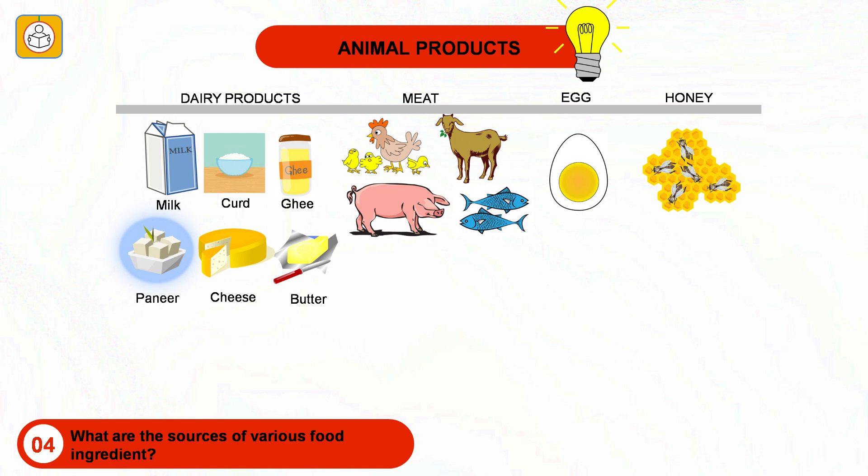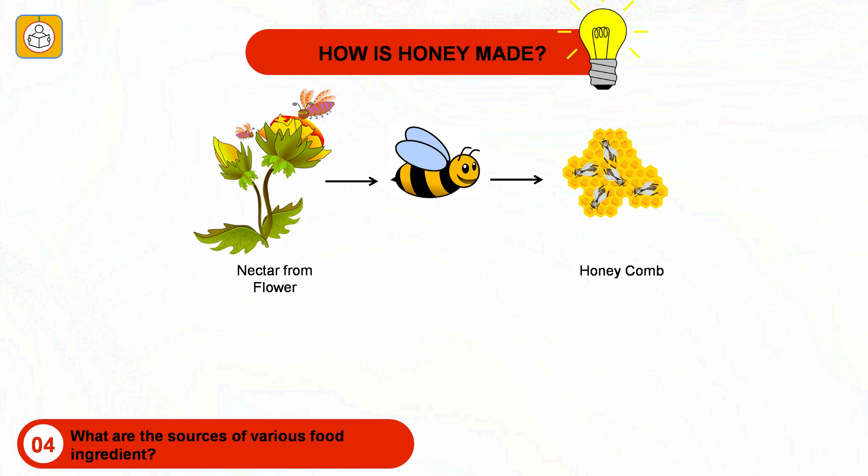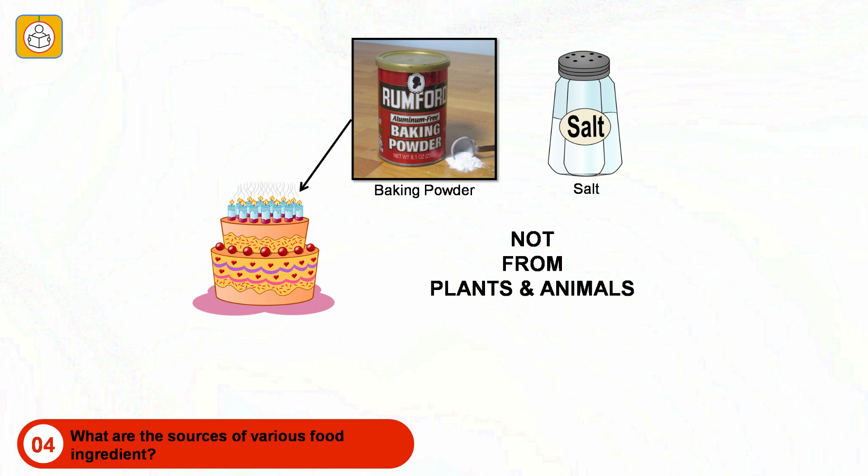Animal products primarily include dairy products such as milk, curd, ghee, paneer, cheese and butter; meat which consists of poultry, pork, beef and fish; eggs from poultry; and honey, which is essentially an animal product. Honey starts as flower nectar collected by bees, is then broken down into simple sugars, and turns into honey inside the honeycomb. There are also edible food ingredients not from plants or animals, such as certain chemicals and minerals like baking powder and the most common and important ingredient — salt.